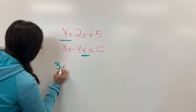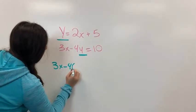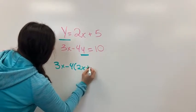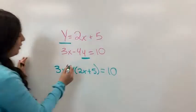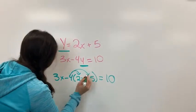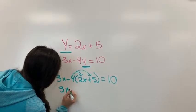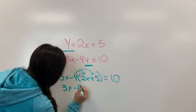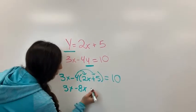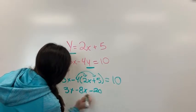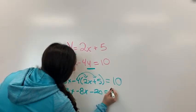And so you would have 3x minus 4 times the quantity 2x plus 5 equals 10. And so you would have 3x minus 8x, plus 4 times 2 is 8, minus 20, 4 times 5, negative 4, equals 10.